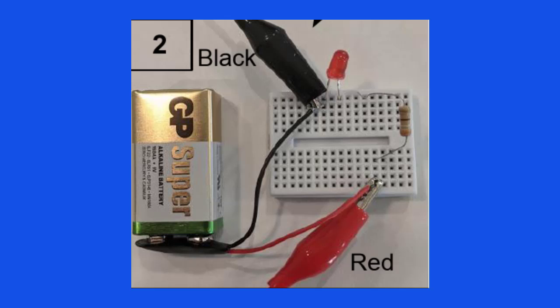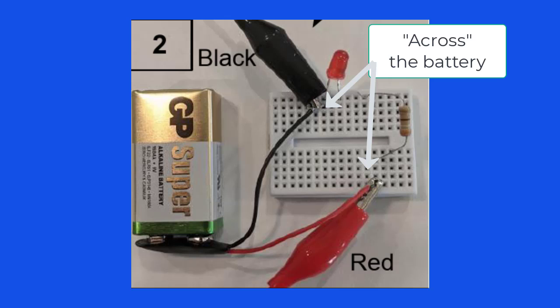When we measured current, we put the meter leads in series with the circuit. But when we measure voltage, we put the meter leads across the component, not in series with it.